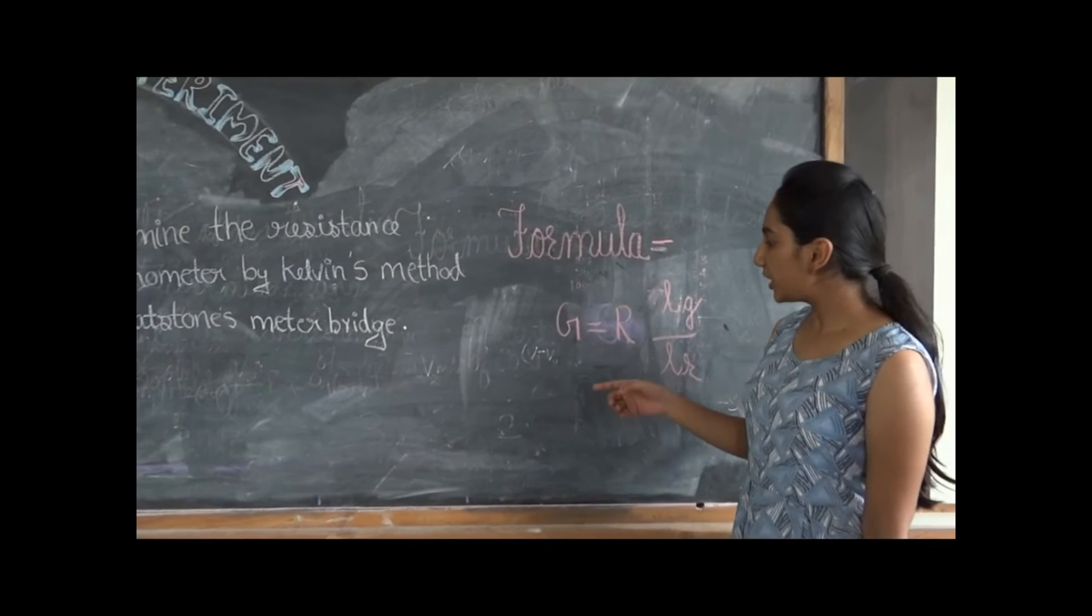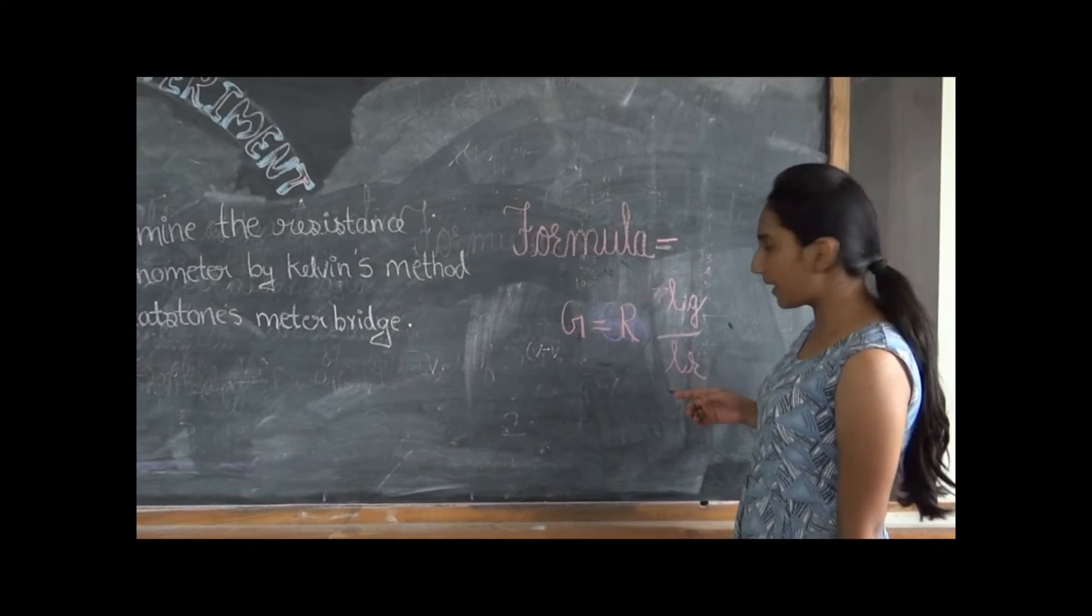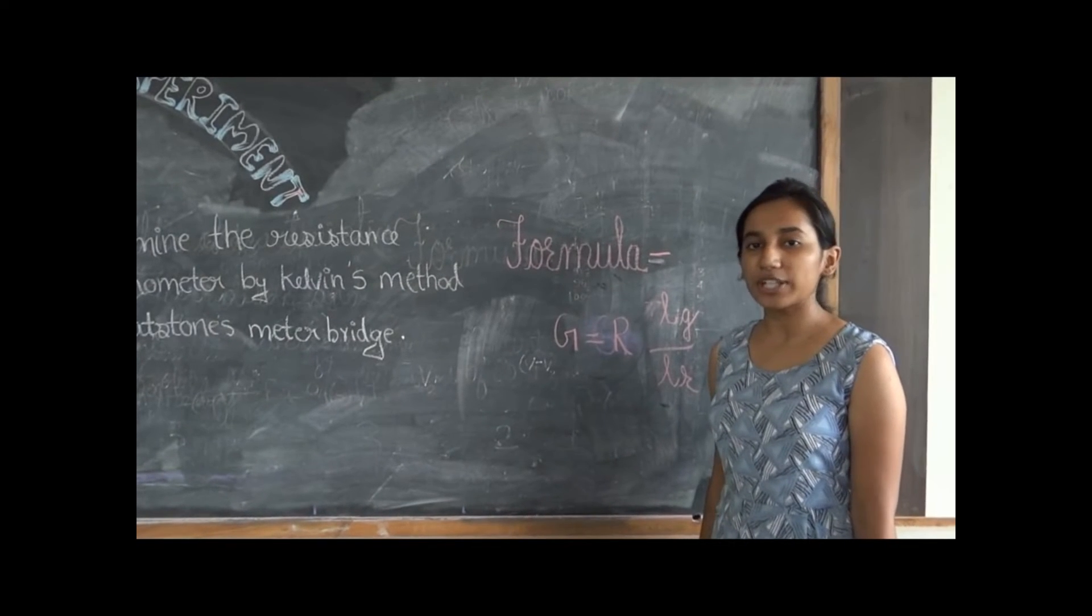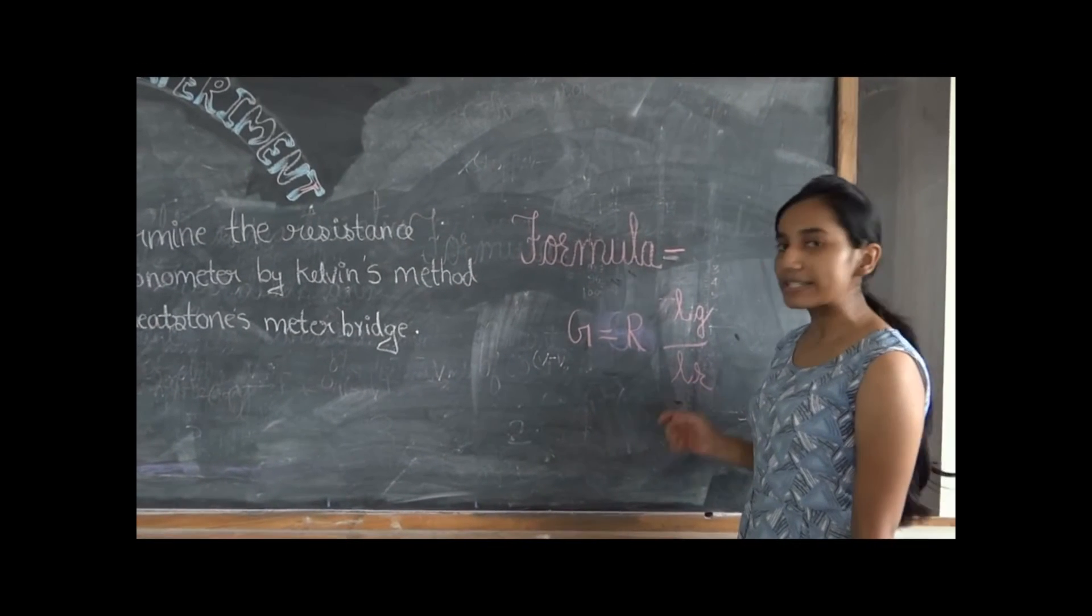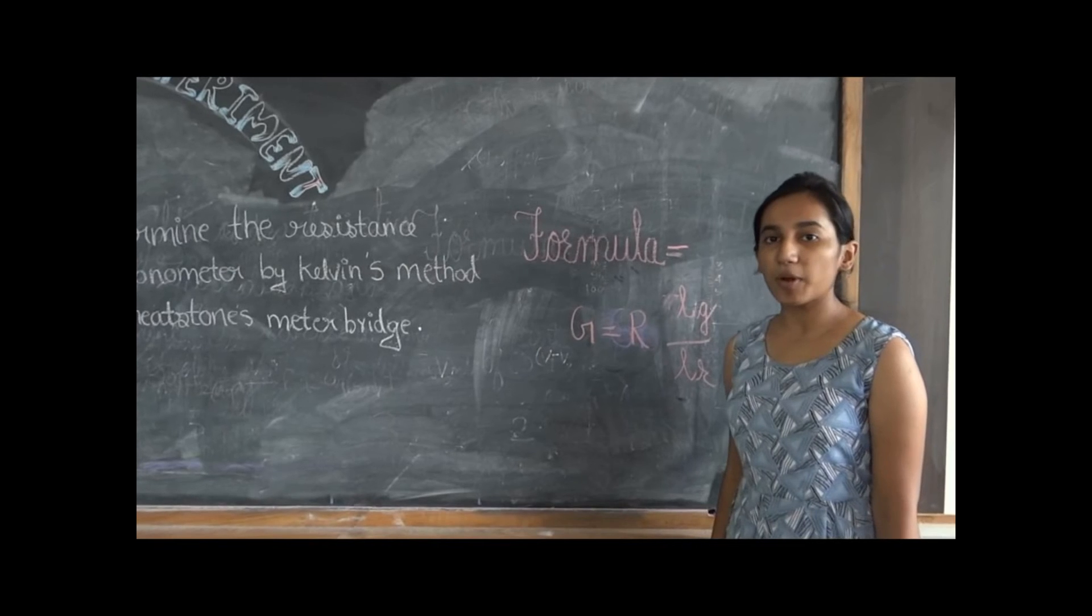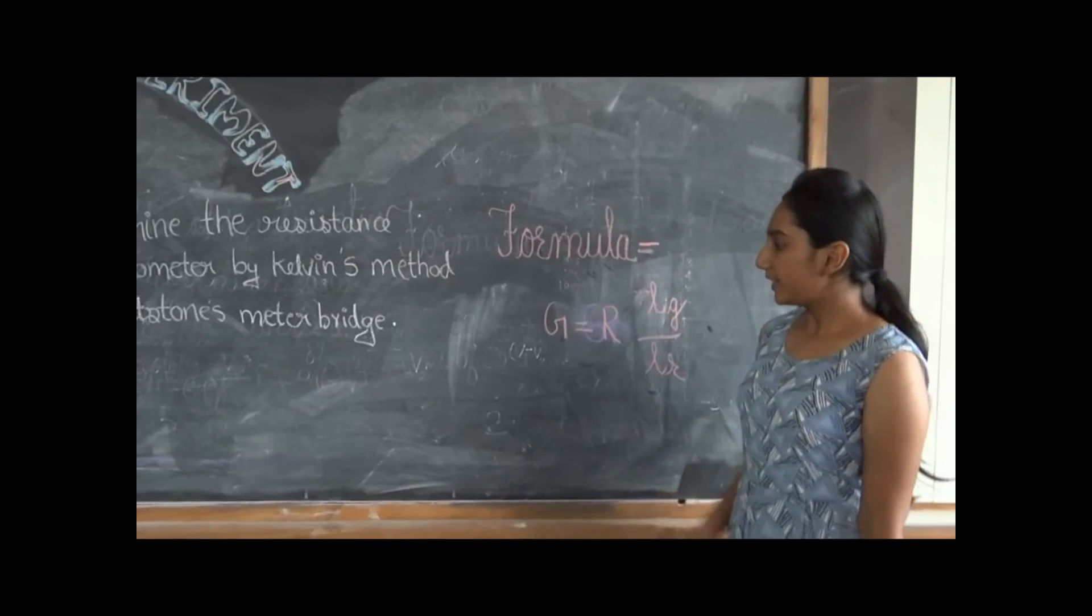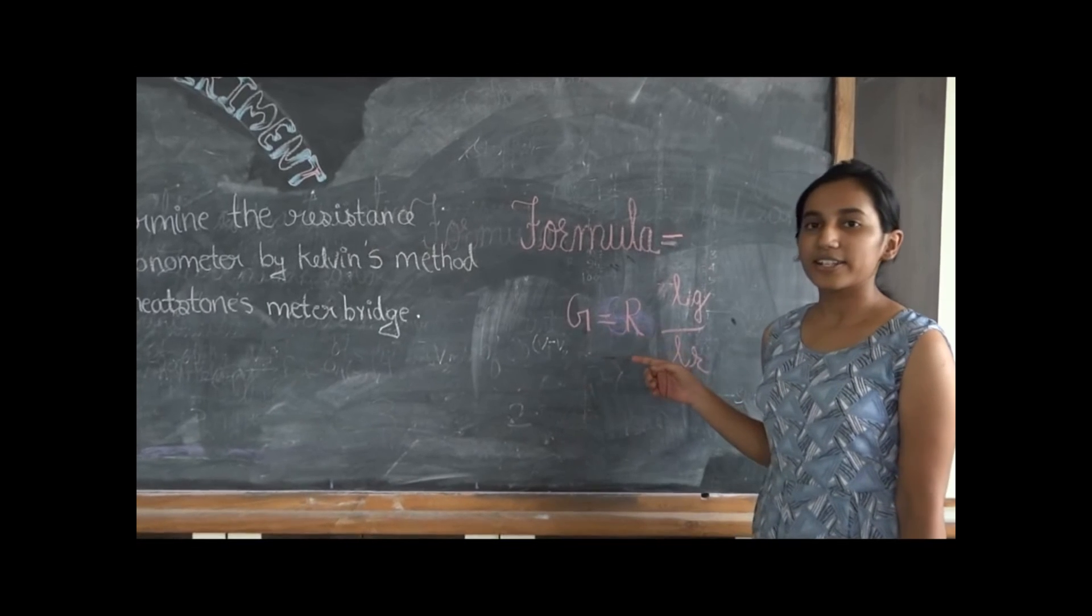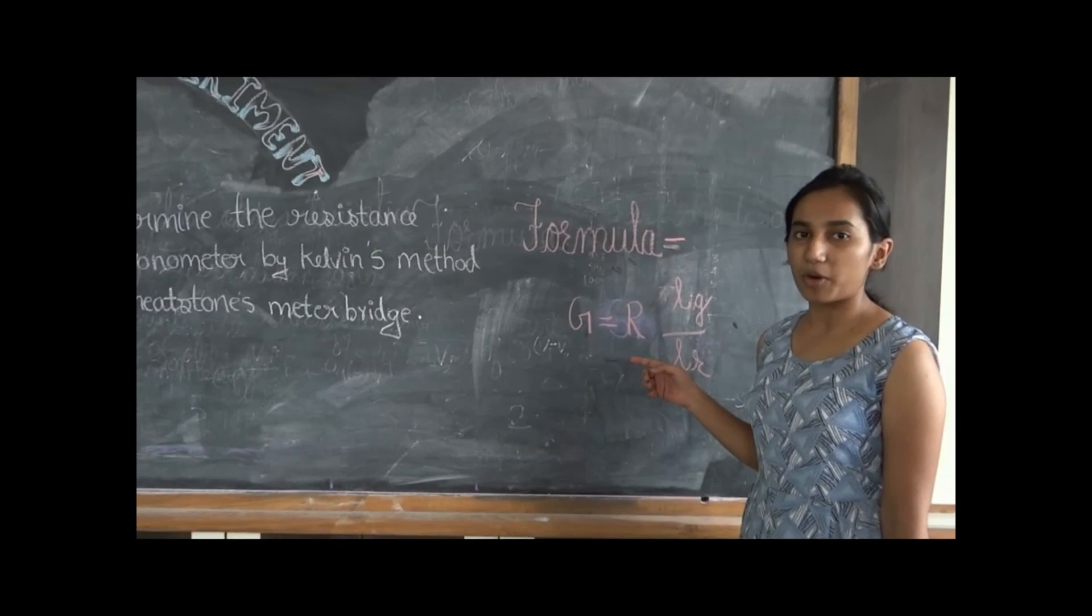The formula is G equals R times LG upon LR, where LG is the length of the bridge wire corresponding to the galvanometer and LR is the length of the bridge wire corresponding to the resistance. Here G is the resistance of the galvanometer and R is the resistance introduced in the resistance box.